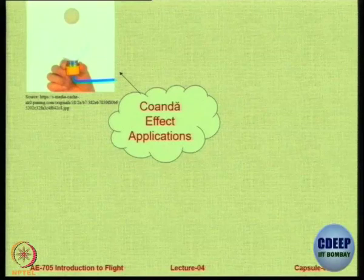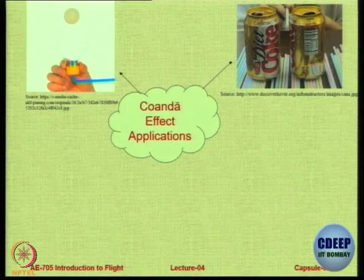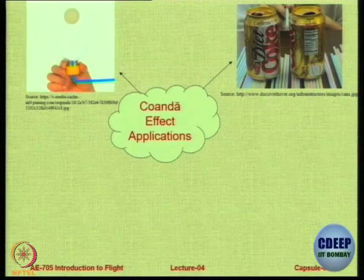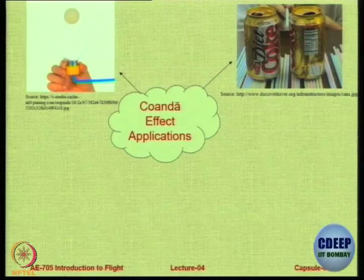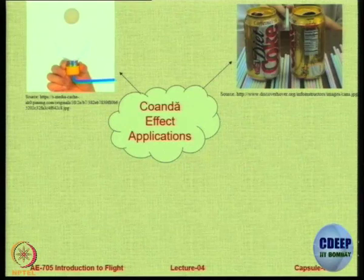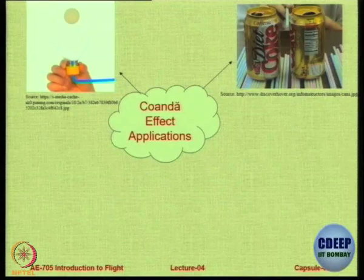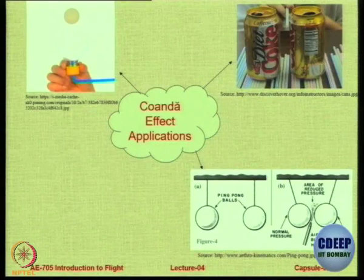You can try the same thing with two empty coke cans — take a straw and blow air. If you remove the friction by putting straws on the bottom, you will see that the cans start moving towards each other. I will be very happy if someone tries this experiment, records the video, and uploads it on Moodle. Just take two lightweight cans, remove friction by putting something soft below like straws, do the experiment and upload the video. This is the ping pong ball experiment — we have the area of reduced pressure and hence they move towards each other.